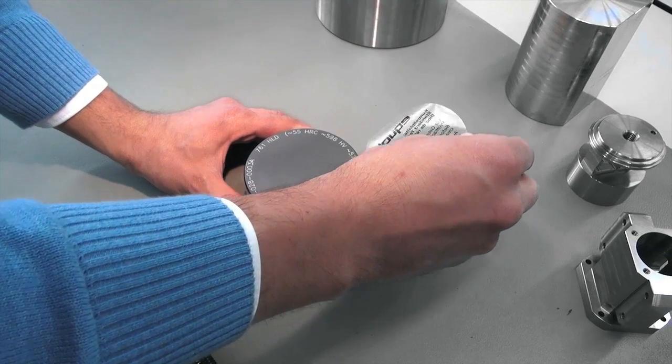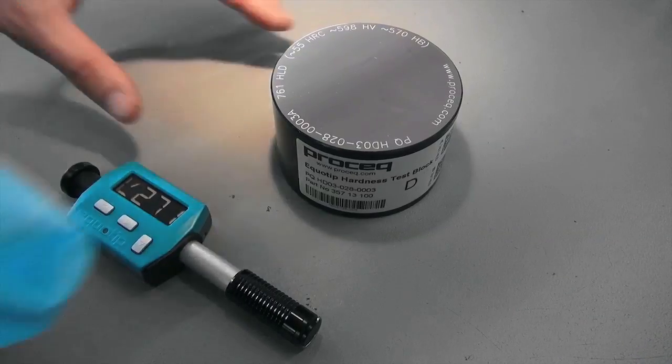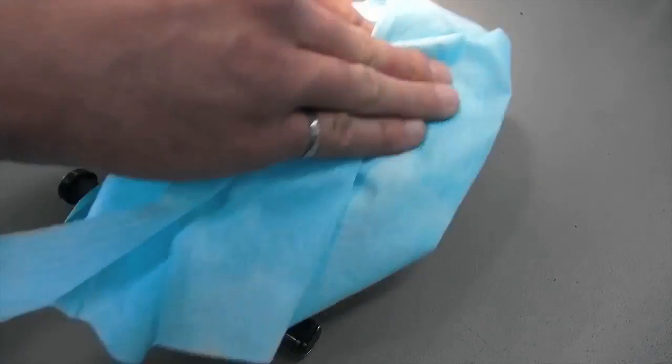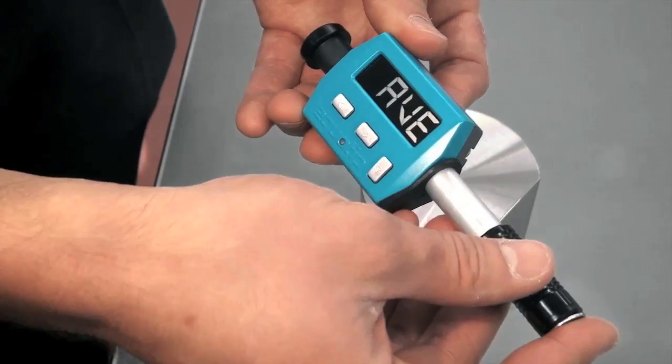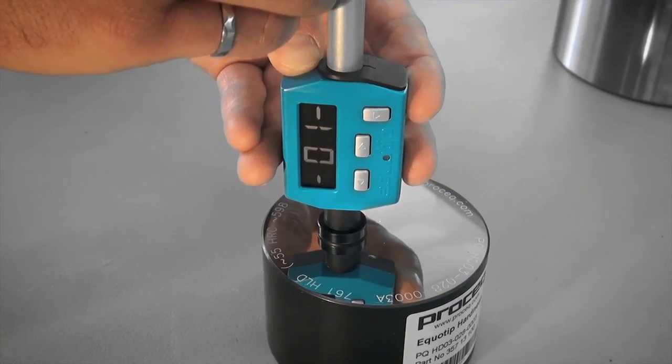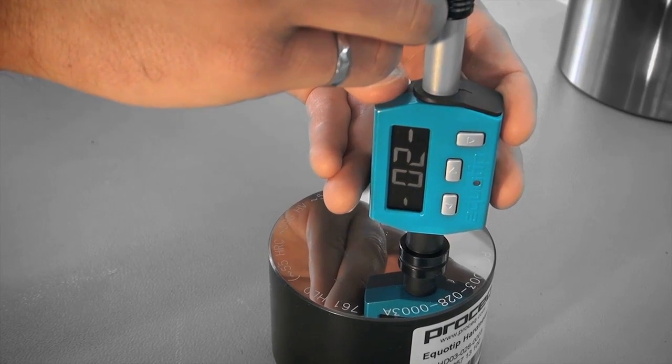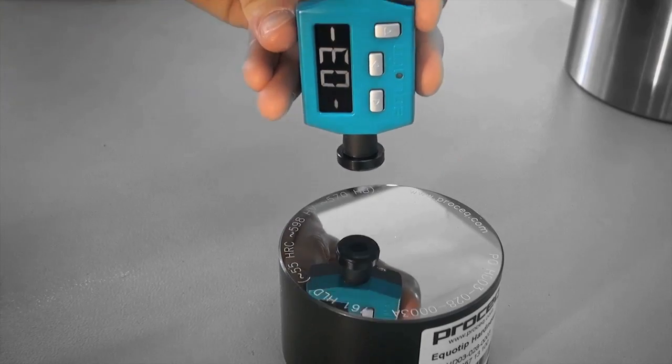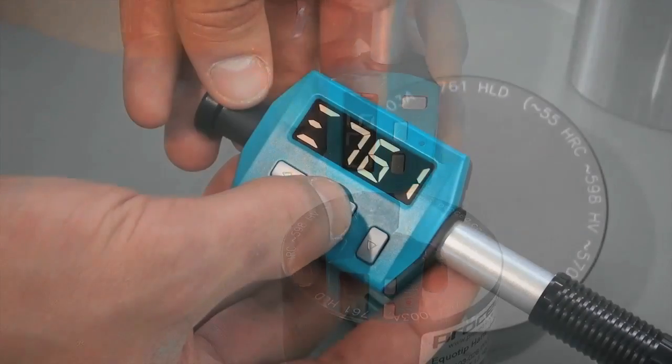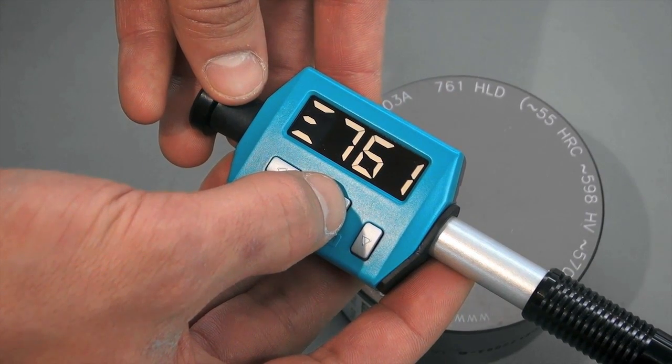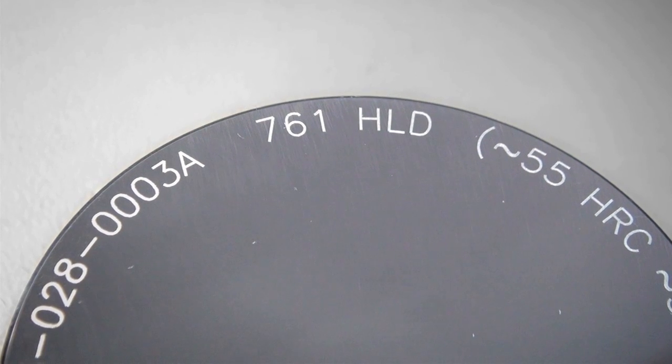Before testing your sample, please perform 10 measurements on the Ecotip test block. Make sure it is on a stable surface and free of vibrations. The test block, like any other sample, should be clean and dry. Perform a loading movement. Make sure you don't measure on the same spot more than once. After the tenth measurement, press the right key to display the average value. The measured average should be in alignment with the calibration value that is engraved on the test block.